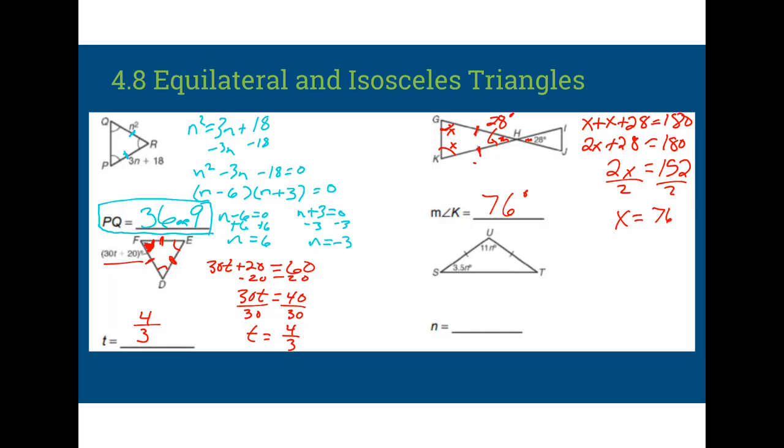And we have another triangle sum theorem problem. So because I know that these sides are congruent, segment SU and segment UT, I know that this angle also has to be 3.5N. Remember, it's the two opposite angles. So it's this angle and this angle are congruent. That's why I know it's not that 11N that it matches up with. And now that we know that, we can set up our triangle sum theorem equation.